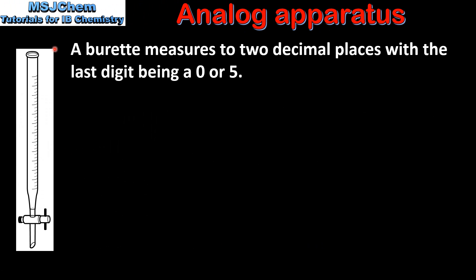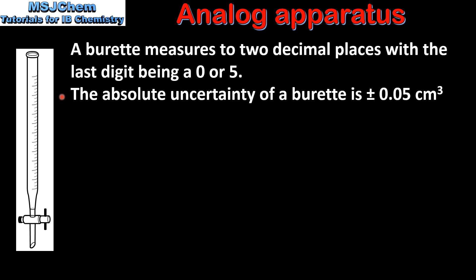In our last example we look at the absolute uncertainty for a burette. A burette measures to two decimal places with the last digit being either a 0 or a 5. The absolute uncertainty of a burette is plus or minus 0.05 centimeters cubed.